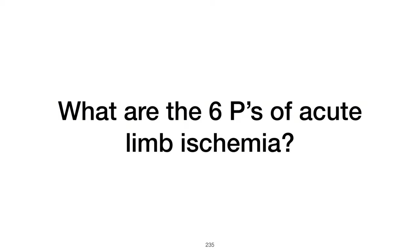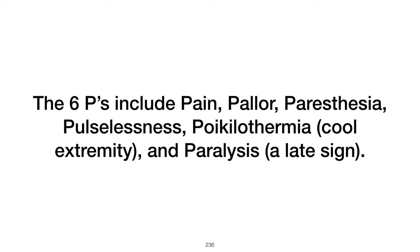What are the six P's of acute limb ischemia? The six P's include pain, pallor, paresthesia, pulselessness, poikilothermia (cool extremity), and paralysis — a late sign indicating severe ischemia.